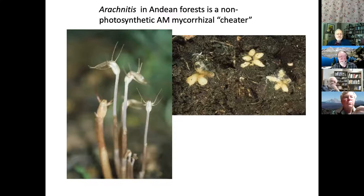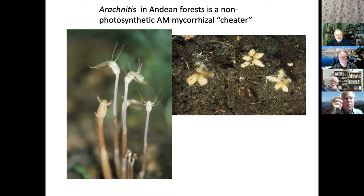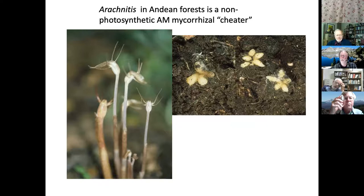AM plants can also cheat the system. There are tropical plants that lack photosynthesis and sponge off arbuscular mycorrhizal interactions, just as the monotropes do with ectomycorrhizal networks.